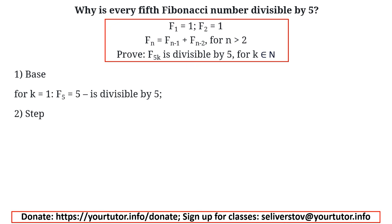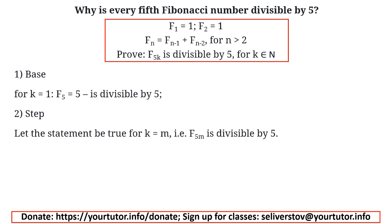Next, we take the step of induction. We assume that our statement is true for some k, which we denote by the letter m. That is, the Fibonacci number with index 5m is divisible by 5. What happens if we consider the number m plus 1 that follows it? We get the Fibonacci number with index 5 multiplied by m plus 1, or 5m plus 5. We now use the fact that each Fibonacci number, except for the first two, is equal to the sum of the two previous numbers.